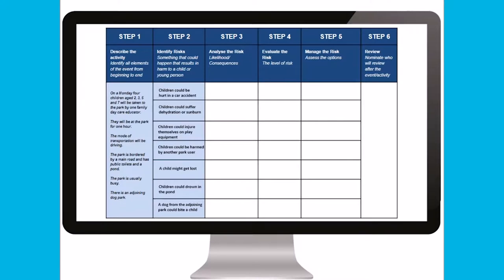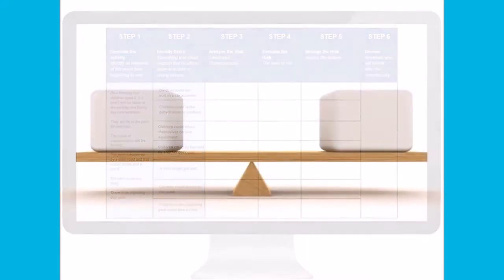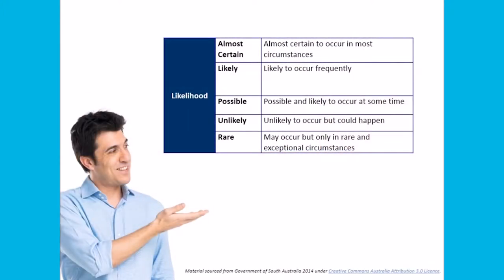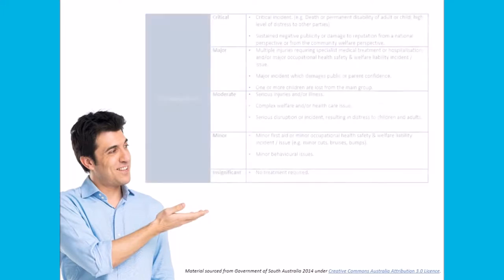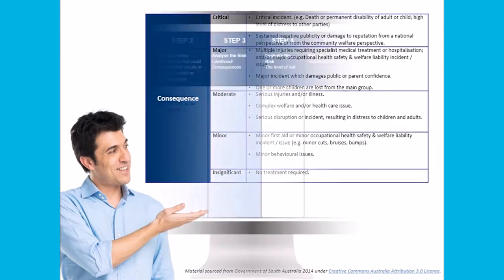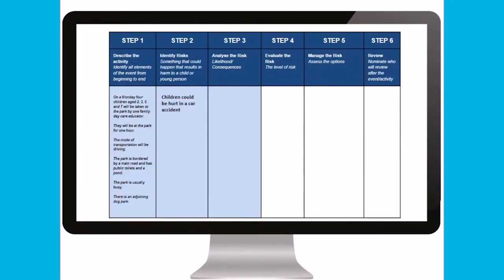Step three is to analyze the risks. In this step you should consider how likely it is that the risk will occur and what would happen if the risk did occur. The likelihood can be determined on a scale of rare to almost certain, and consequence can be measured on a scale of insignificant to critical. For example, analyzing the risk that children could be hurt in a car accident: the likelihood would be rare, however if it did happen the consequences would be moderate to critical.